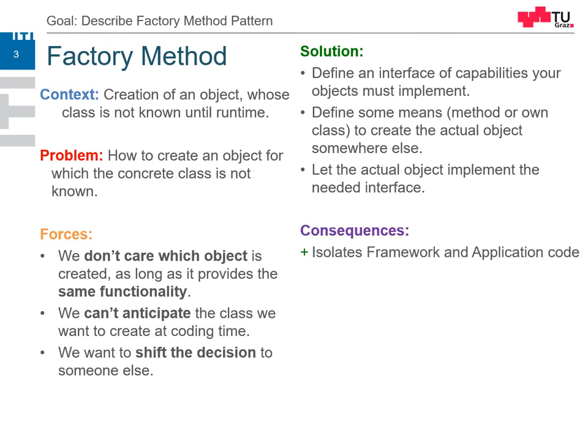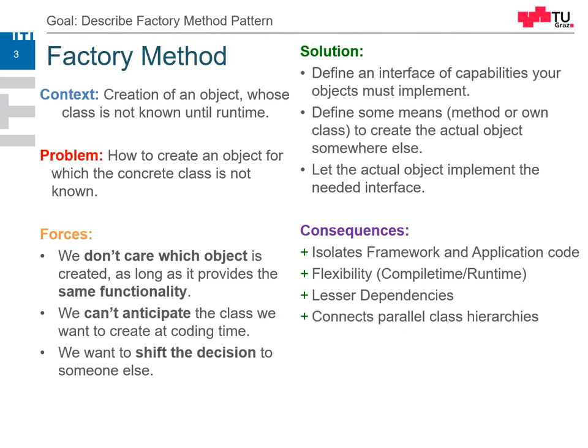The consequences are that the framework code and application code are isolated. We are flexible — we can change the object during runtime and we don't need to know it during compile time. We have fewer dependencies because we only depend upon the interface. We also connect parallel class hierarchies, so our application code can develop independently of the object code, and the interface can also develop independently.